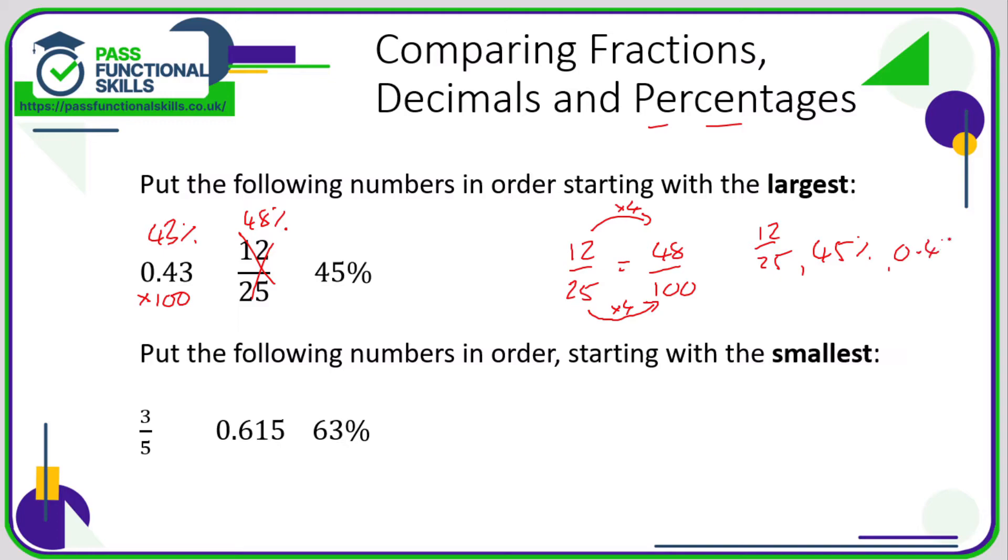In this next example, fraction into a percentage is 3 top divided by bottom times 100, or 3 divided by 5 multiplied by 100. Or if you remember that one fifth is 20 percent, then three fifths is triple 20 percent, so that is 60 percent.